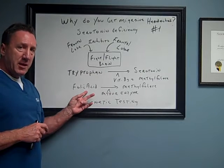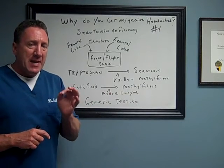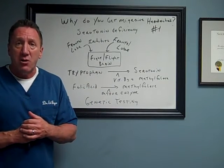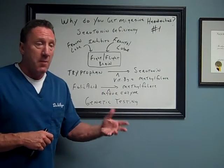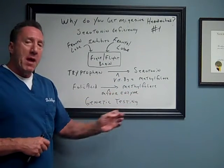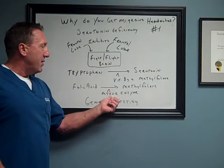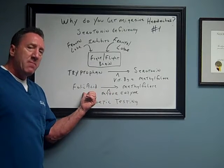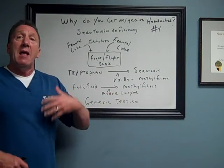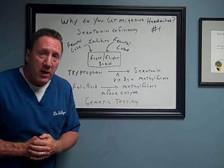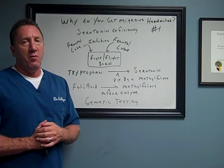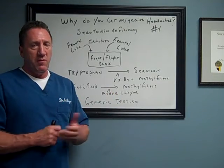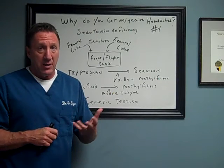MTHFR converts folic acid, which is inactive vitamin B9 — we cannot use folic acid directly in our body. This is the form vitamin B9 exists in nature and in most really bad supplements. Folic acid gets converted into methylfolate, the active form of vitamin B9, by way of this enzyme. Many patients in my clinic are not making this enzyme, so they're not converting folic acid into methylfolate. That's a problem because in order to make serotonin we need the active form of vitamin B9, methylfolate. If you're not making it due to a mutation on the genes that produce this enzyme, you're going to have a serotonin deficiency, which can lead to depression, anxiety, and other neurological complaints.